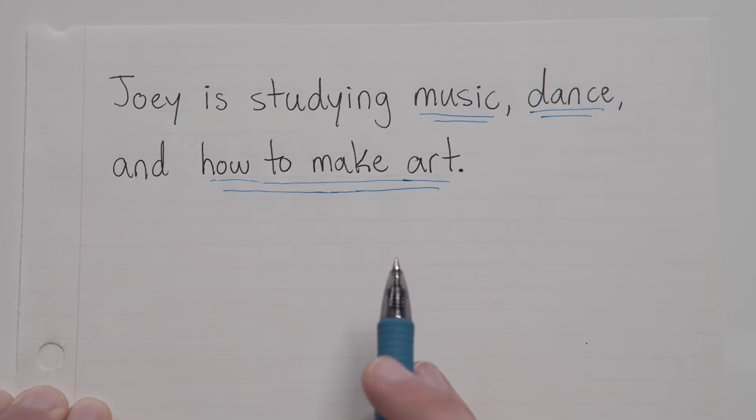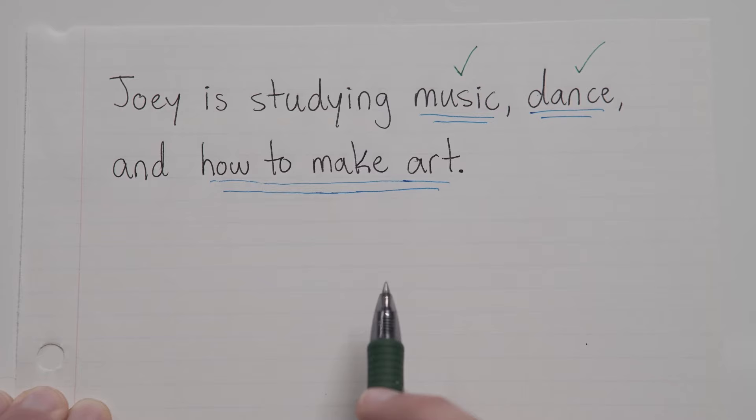Should be these three. Now, of those three things, which of them are already parallel with each other? Which ones are already written in the same way? Should have said music and dance. So then how do we change this last part? How do we change it so that it sounds just like music and dance? Well, music is a noun, and dance is also a noun. So we should just say art. Just art. Joey is studying music, dance, and art.